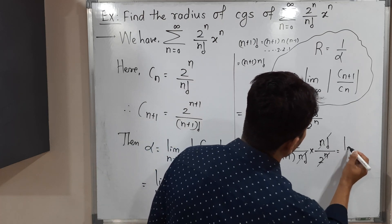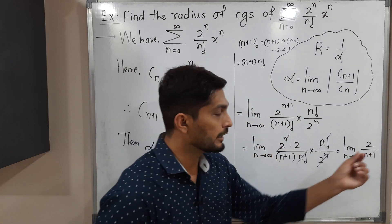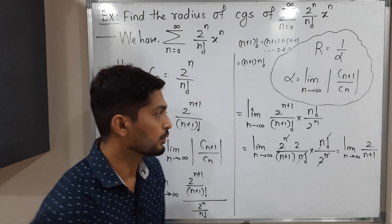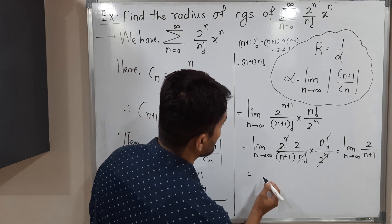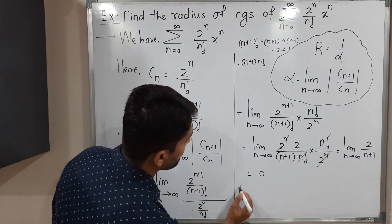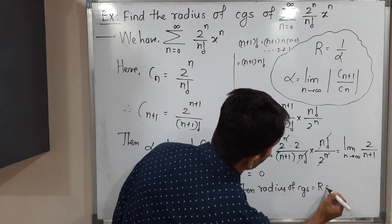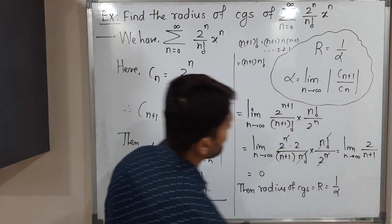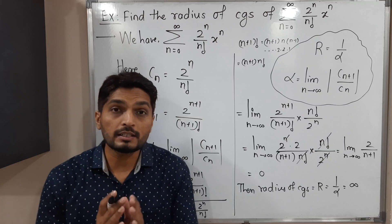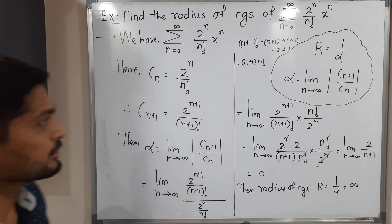The remaining part is the limit as n tends to infinity of 2 over (n+1). Applying the limit, the denominator goes to infinity while the numerator is fixed at 2, so the value is 0. Therefore alpha equals 0, and the radius of convergence R equals 1 over alpha equals 1 over 0, which is infinity. This means the given power series is convergent over all real numbers for each real number x. Make a screenshot of it.